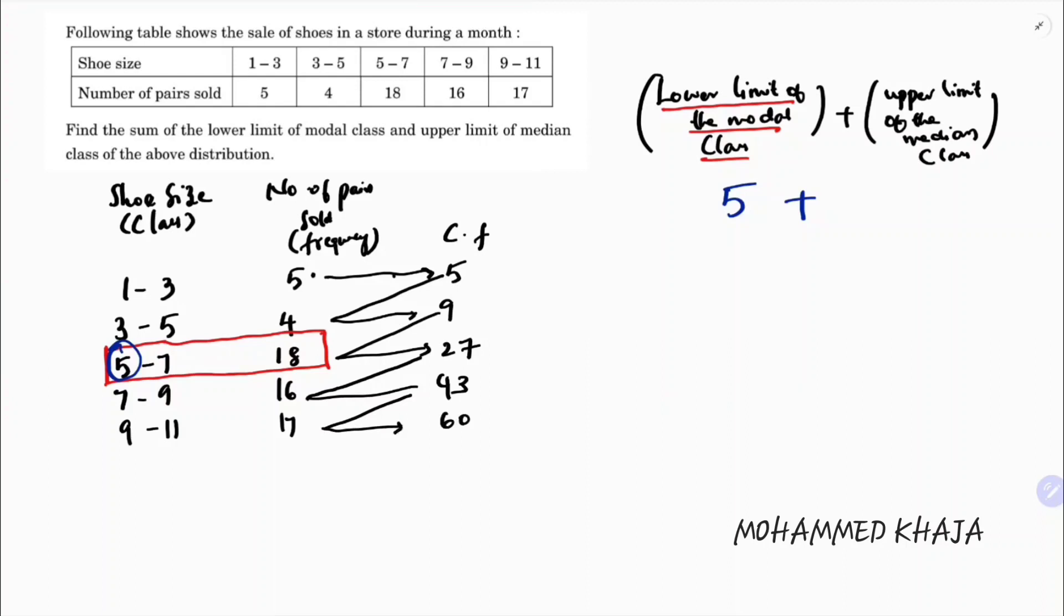The total frequency is 60. To select the median class, we calculate n/2, which is 30. We find the class containing the 30th value.